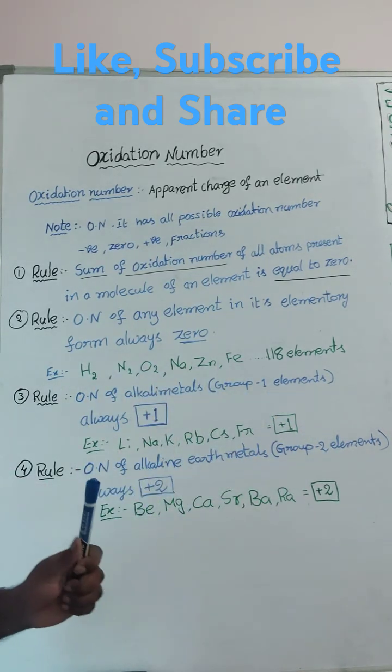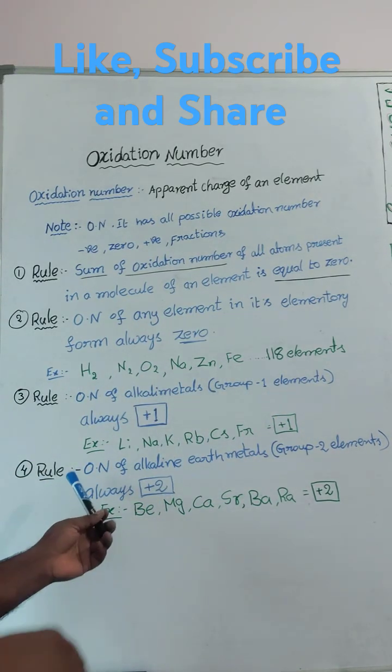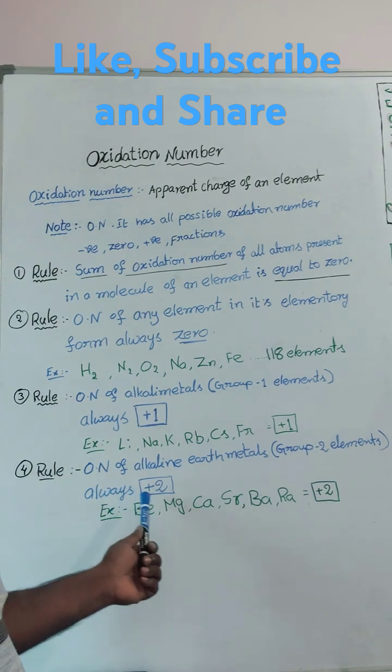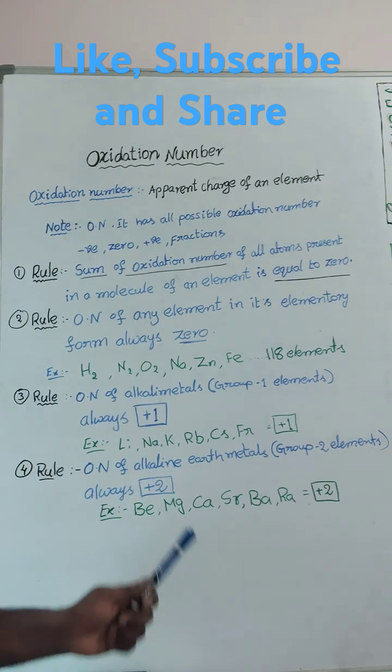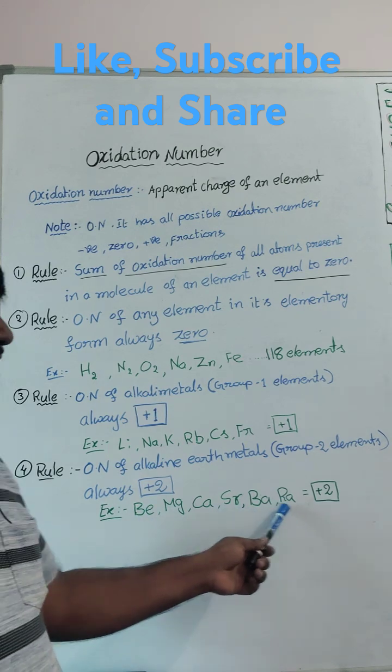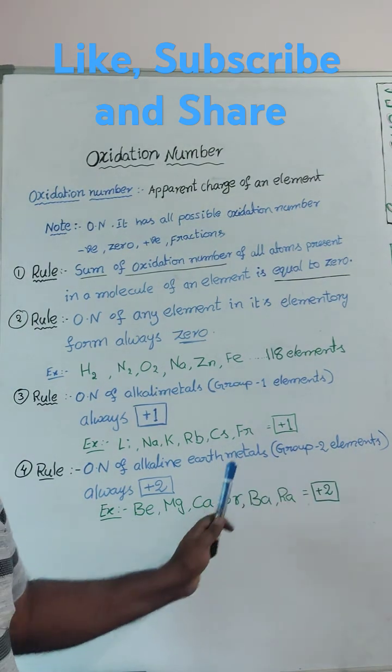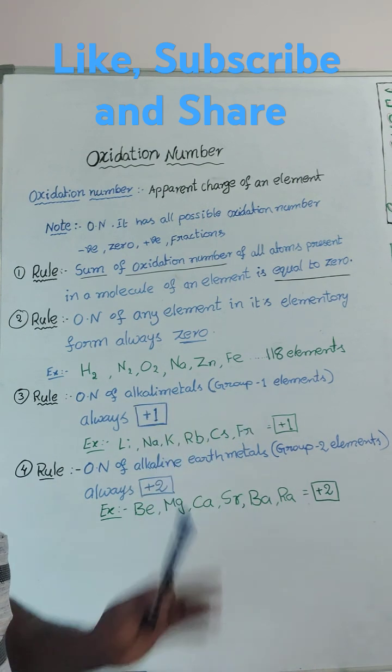all plus 1 oxidation number. Next group 2, alkaline earth metals we used to call them, their oxidation number always plus 2. Beryllium, magnesium, calcium, strontium, barium, radium, belongs to group 2, always plus 2.